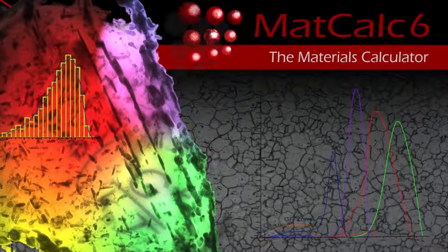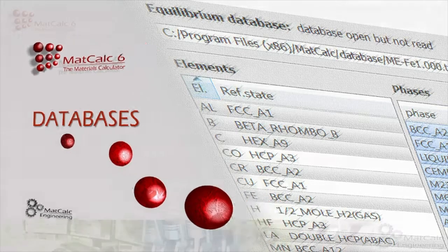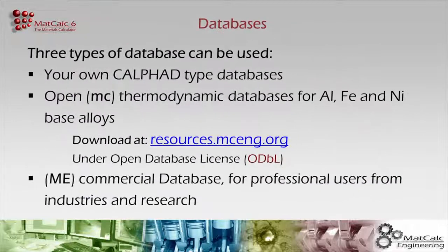With the release of MATCALC 6, metallurgical process engineering and simulation enter a new era. The MATCALC engineering commercial databases are professional state-of-the-art thermodynamic, diffusion, and thermophysical databases for steel, aluminum, and nickel. We can also tailor multi-component, multi-phase special databases to your specific needs. Since we conform to the established and powerful CALPHAD standards, you can use your own CALPHAD database or download, free of charge, the open MATCALC thermodynamic databases for aluminum, steel, and nickel base alloys.